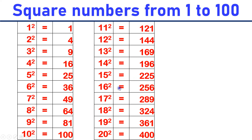16 square is equal to 256. 17 square is equal to 289. 18 square is equal to 324. 19 square is equal to 361. 20 square is equal to 400.